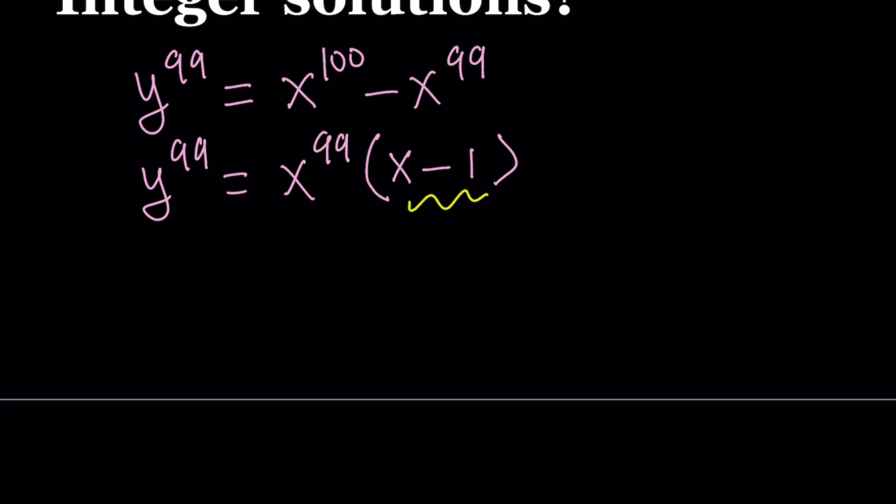Why? Because x to the power 99 is a 99th power, and the left-hand side is a 99th power. By the way, 1 is a 99th power, so any number will work with 1.